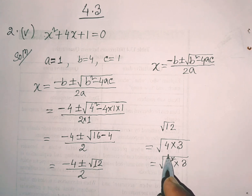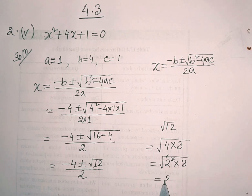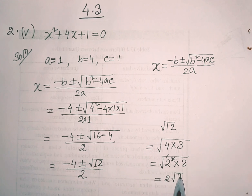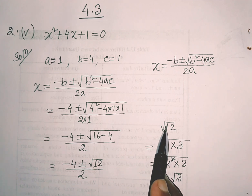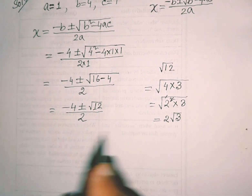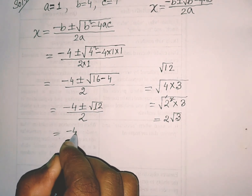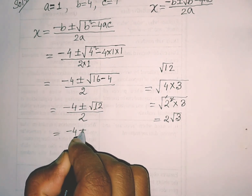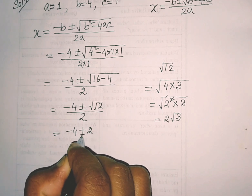A squared and 3 roots cancel. I will write 2 roots. So root 12 is 2 root 3. If you have root 12, you can write it as 2 root 3.